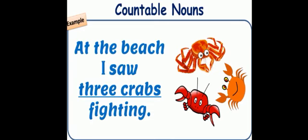Example number 3. At the beach I saw 3 crabs fighting. Here the noun crabs is countable: 1, 2, 3. So crabs are countable nouns.